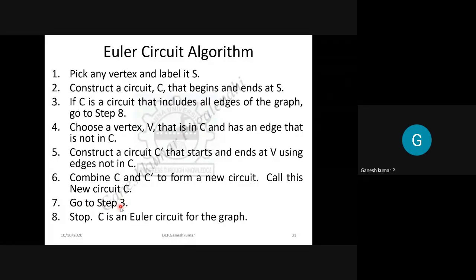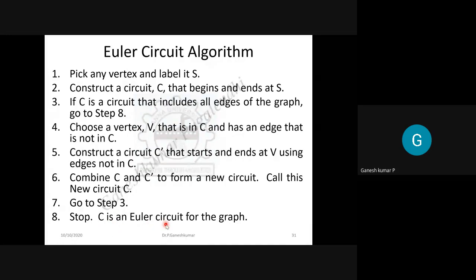After merging, go back to step 3: check whether the circuit includes all edges. If yes, stop and print the circuit as the final Euler circuit. Otherwise, repeat the process, finding more sub-circuits. Each sub-circuit gives a part, and after merging all sub-circuits to form a new circuit that includes all edges, you have a perfect Euler circuit for the given graph.